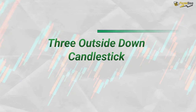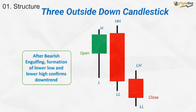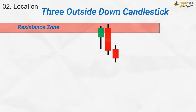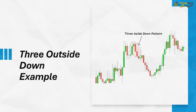Now, let's dive into the three outside-down candlestick pattern. This pattern is composed of three candles. The first two form a bearish engulfing pattern, where the second candle completely engulfs the first, signaling potential weakness in the upward trend. The third candle then confirms the reversal by making a new lower high and lower low, further indicating a shift in momentum. This pattern typically forms near a resistance zone, acting as a strong reversal signal from a bullish to a bearish trend.